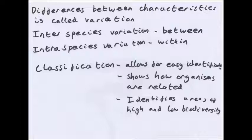We also use something called a dichotomous key to classify — this is just a set of yes or no questions. You might have, say, eight species and seven questions. For example: does it have four legs? Yes — go to this question; no — go to that question. And so you can use it to identify organisms.